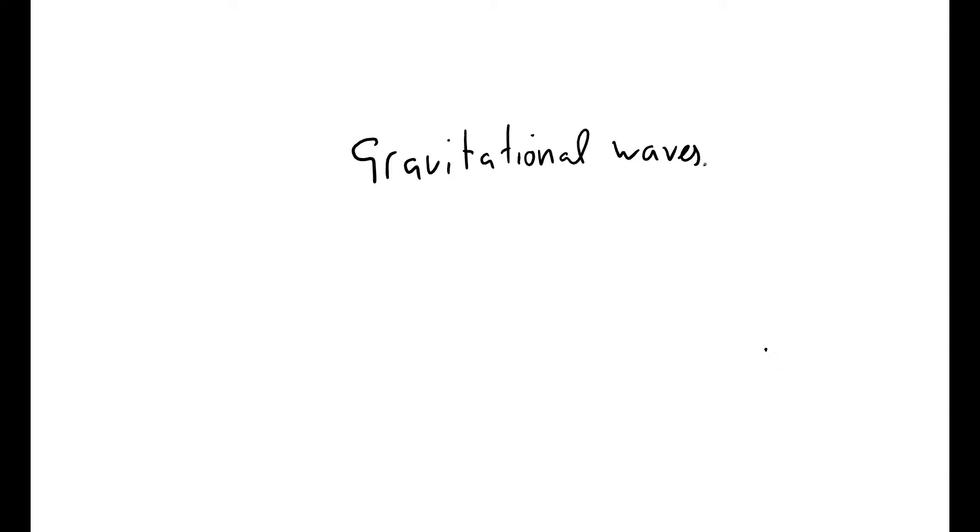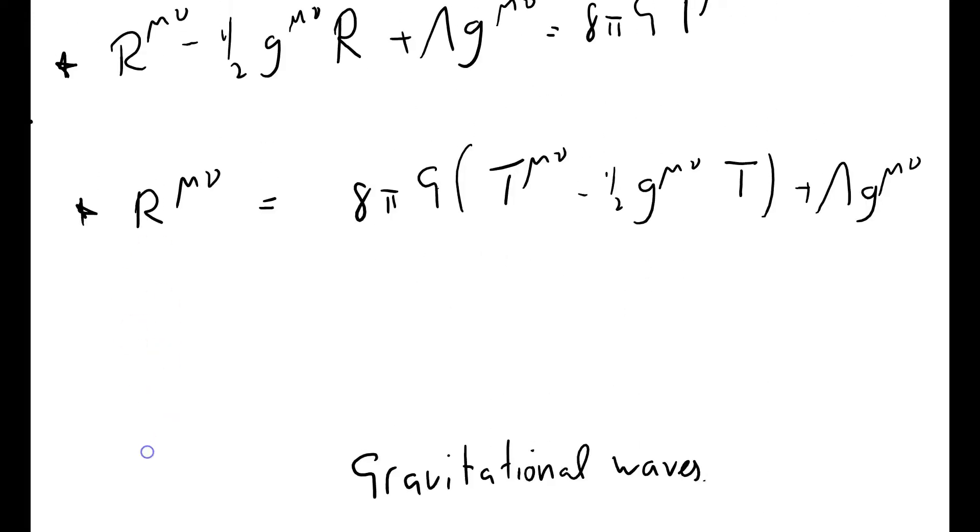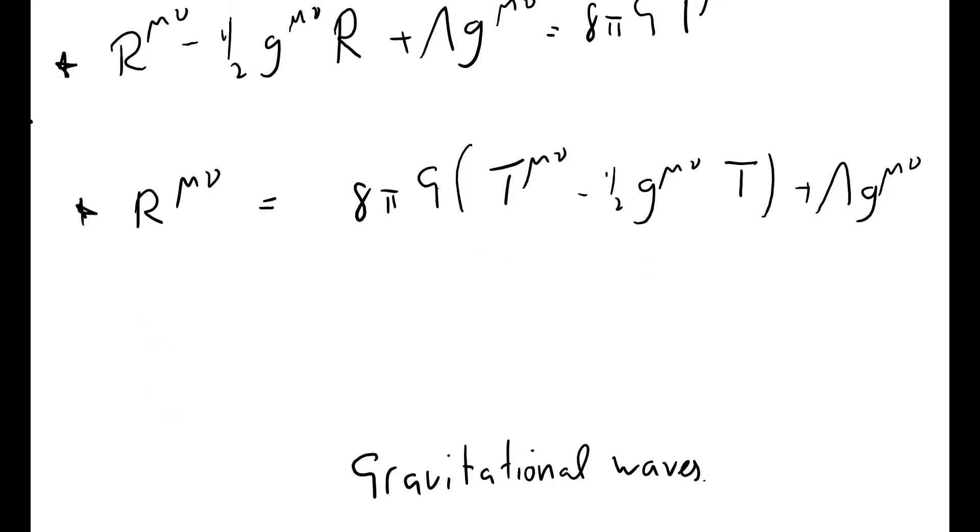is to consider one idealization after another. So you consider a sequence of simplifying assumptions that allow you not to solve the full equations, but to solve some simple case of the equations that you're considering. And of course, the equations that we're considering are the field equations, and I've got them written down here in two different forms.